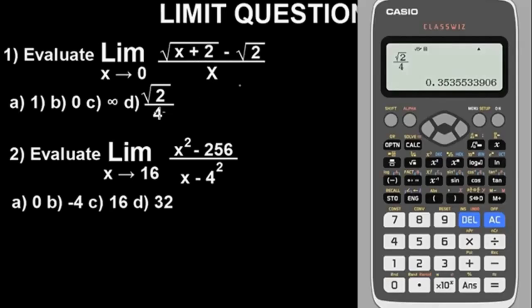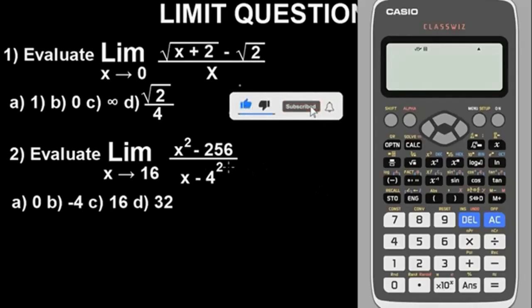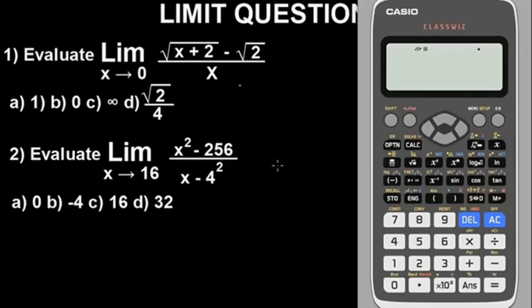Let's solve question two. I hope you're understanding what I'm explaining here. Same principle, method, or technique. This time X is tending to 16. We have to clear the calculator to remove or wipe out the previous number stored.